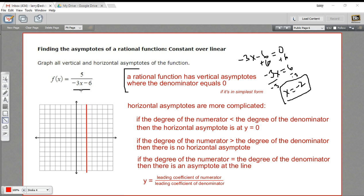There can be more than one. If you have a quadratic down here, you might have two, but in this case, we only have one vertical asymptote.